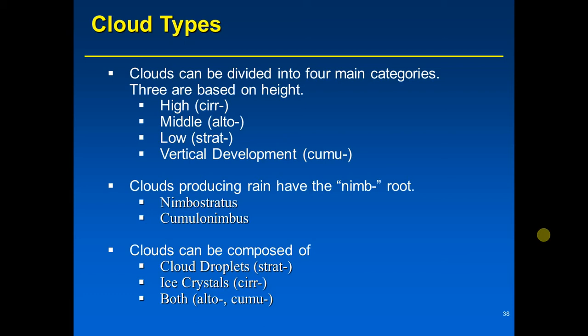Middle clouds are found at levels where liquid droplets and ice crystals can exist simultaneously. Vertical development clouds can begin near the ground where it's warm — cumulonimbus clouds can have bases at temperatures in the 70s to 80°F range — and grow so high that the top is well below freezing, made only of ice crystals. When a portion of the cloud is only made of ice crystals, it's called glaciated.